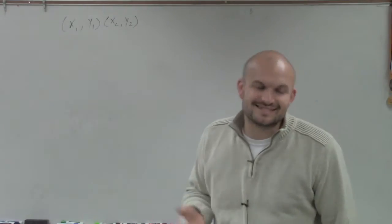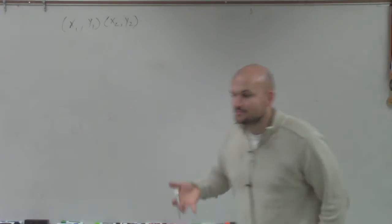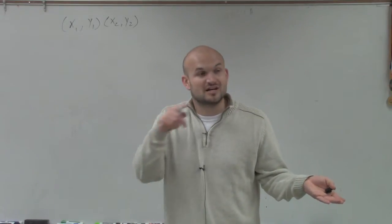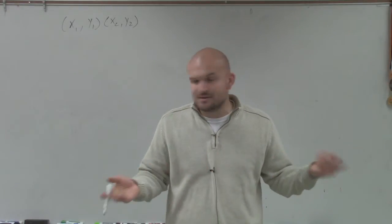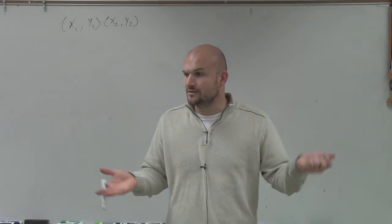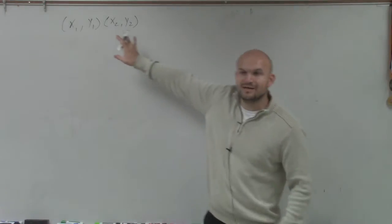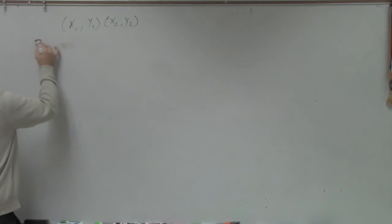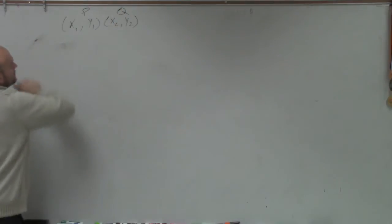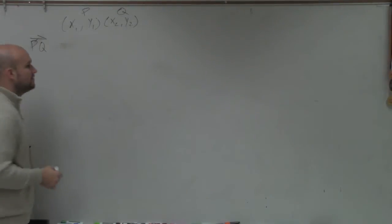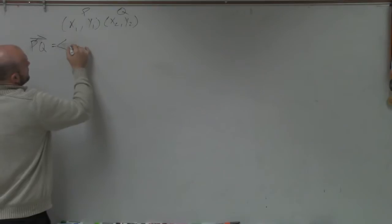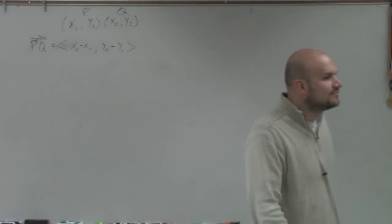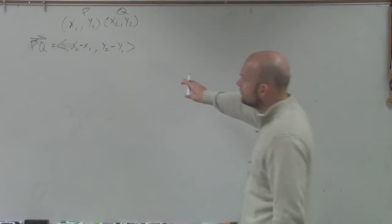Now, the problem came in once we said, hey, this is a directed line segment. It has a direction. So even though this is where our vectors came from, we wanted to standardize this. So to do that, we came up with component form. And component form looks like this: x2 minus x1 comma y2 minus y1. So component form was pretty much essentially the distances and the change of those.